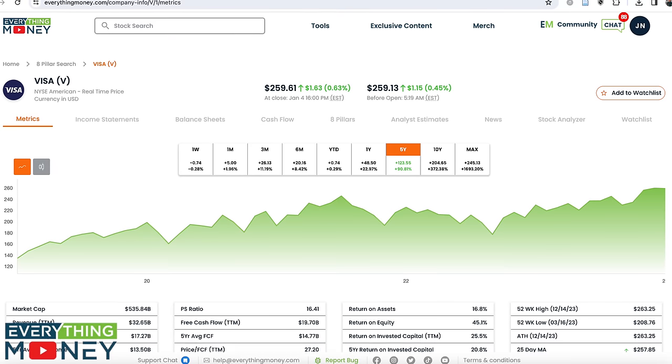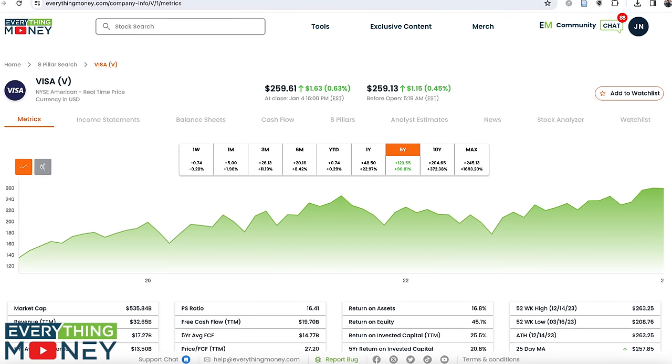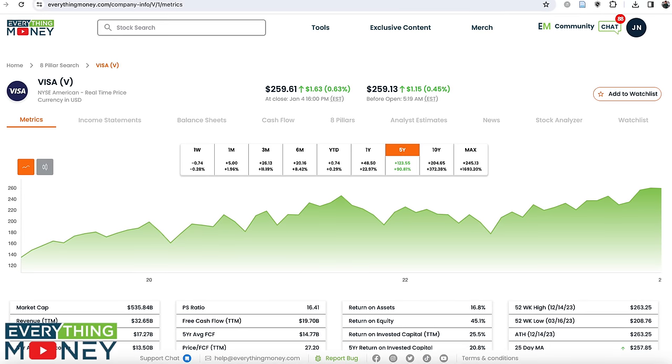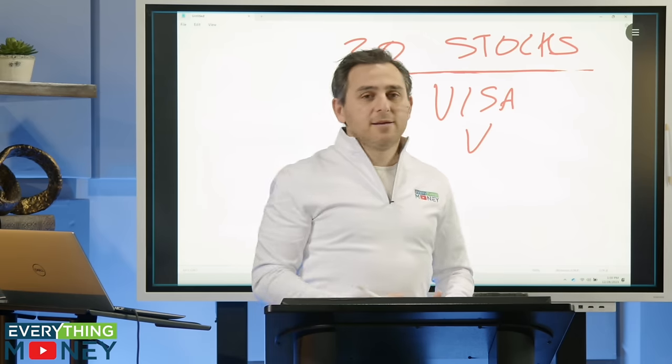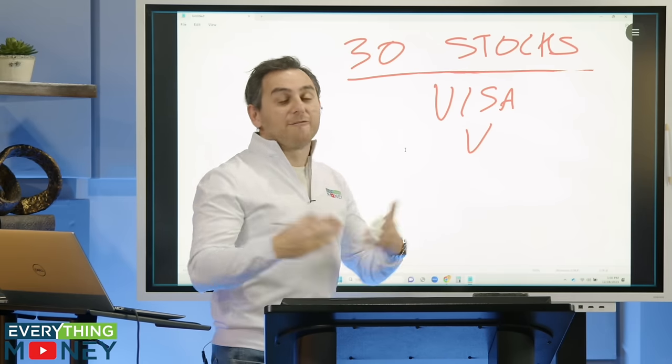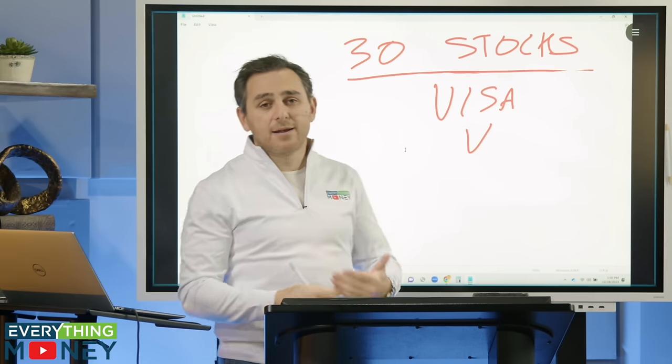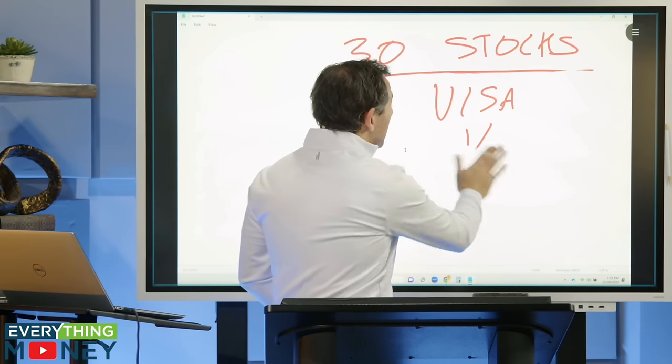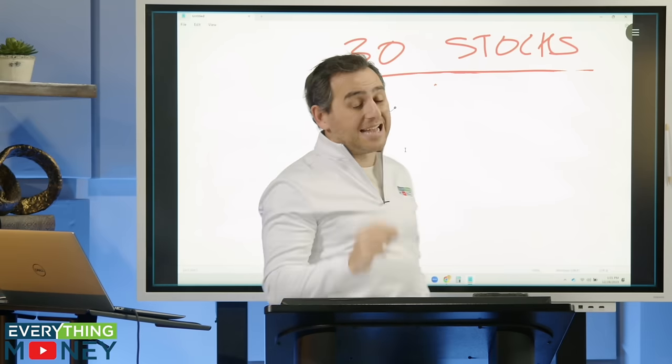Stock number nine, Visa. Visa is American Express's counterpart, ticker symbol is V. Again, huge brand. This is the credit card company for everybody, worldwide, everything. I don't need to explain any more on that one. Now guys, one thing I want to interject real quick before I get to stock number 10.